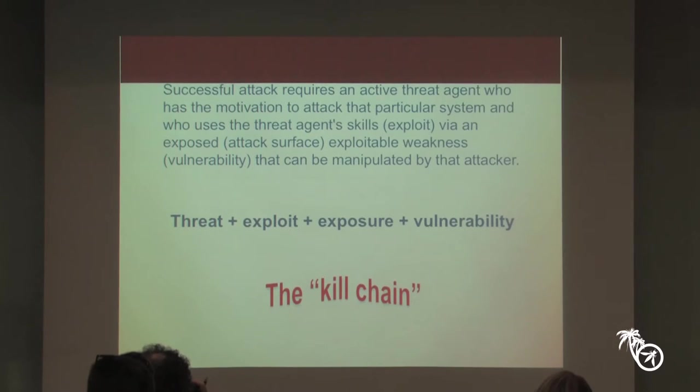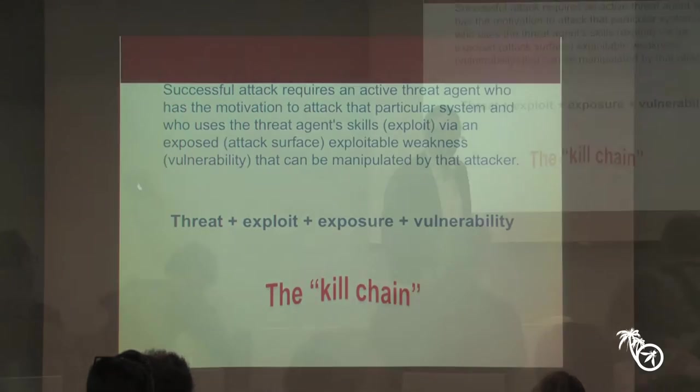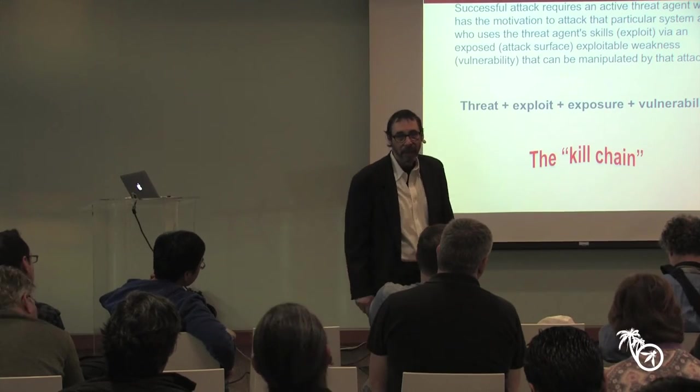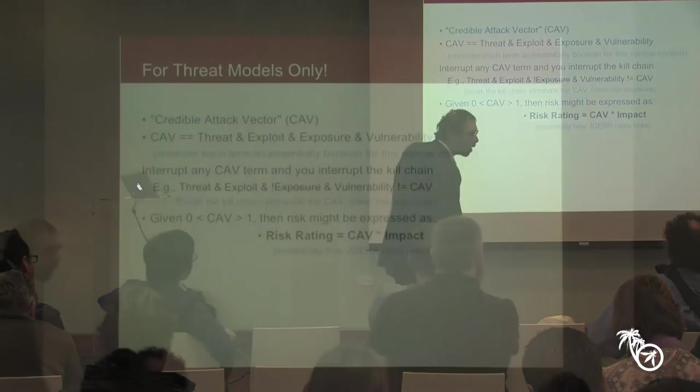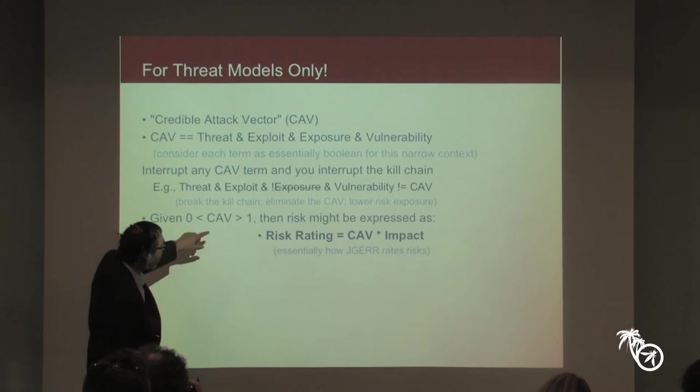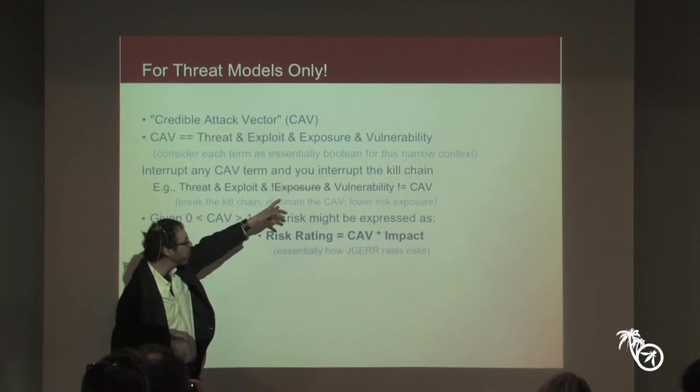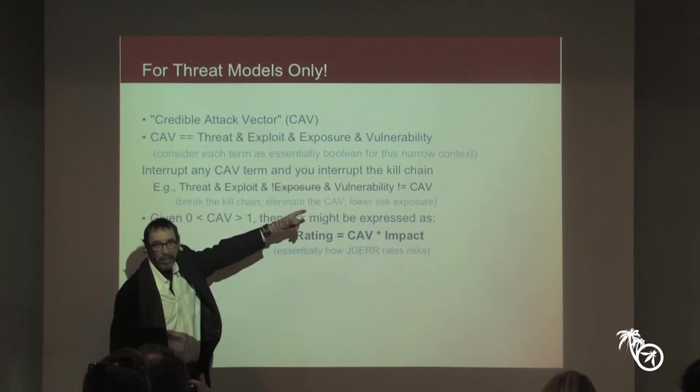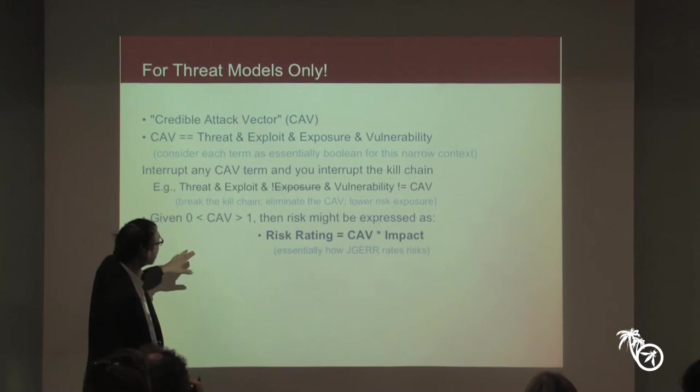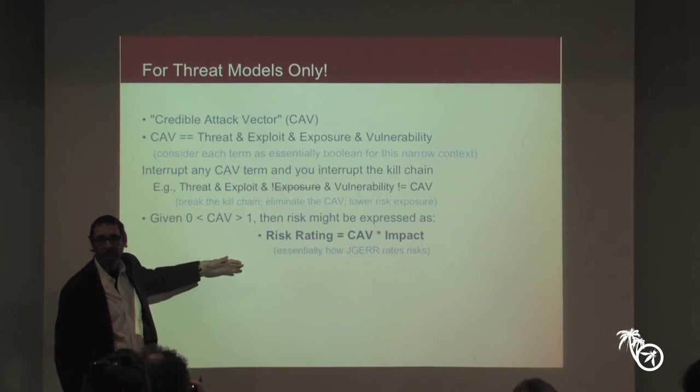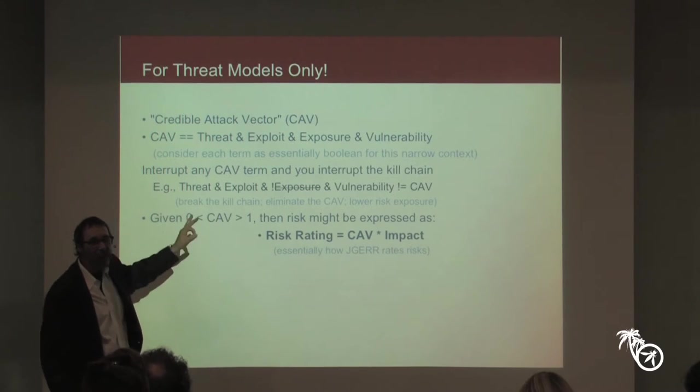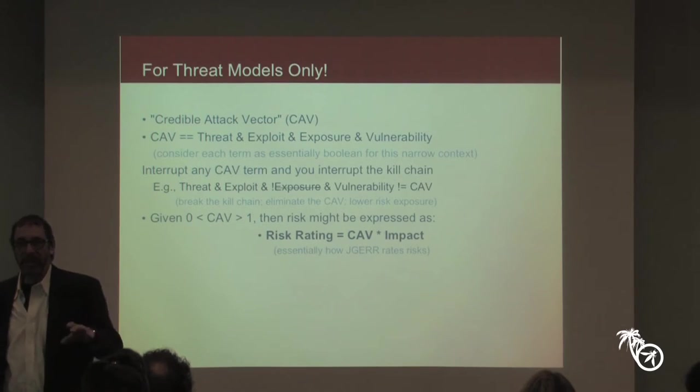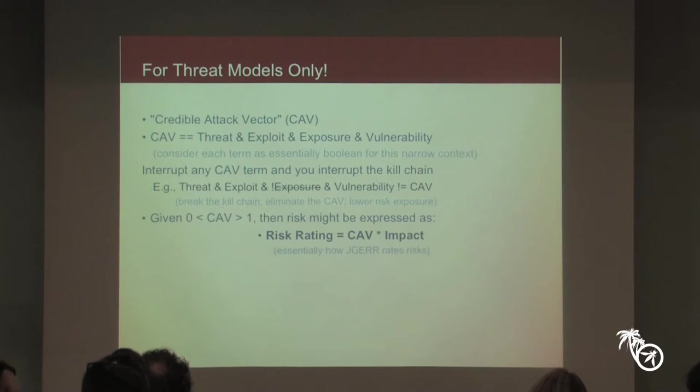And then I'm going to propose this. This is based on FAIR, but I have simplified it tremendously. Jack Jones did read that chapter. He did make lots of comments. I did change the chapter in favor of his comments. However, he did say it was acceptable. All you need to do is treat each one of these as a binary for our purposes. You just need to treat those as a Boolean. If you can interrupt any one of those, you've interrupted what I call a credible attack vector.